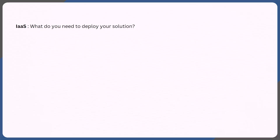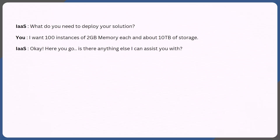If you were to have a chat conversation with IaaS, this is how it might go. It's going to ask: 'What do you need to deploy your solution or application?' You might reply: 'I want 100 instances of 2 GB memory each and about 10 TB of storage.' It would respond: 'Okay, here you go. Is there anything else I can assist you with?'